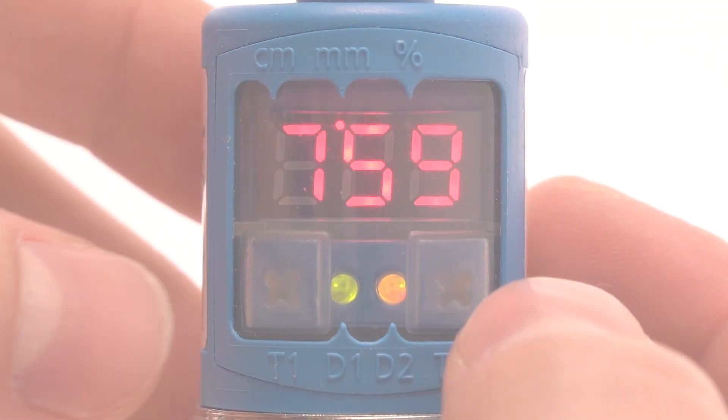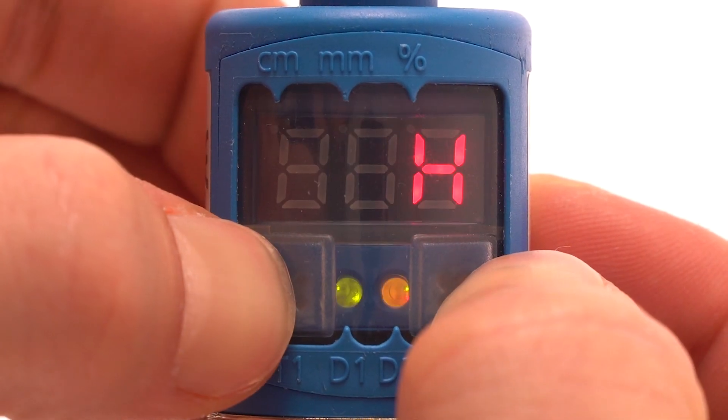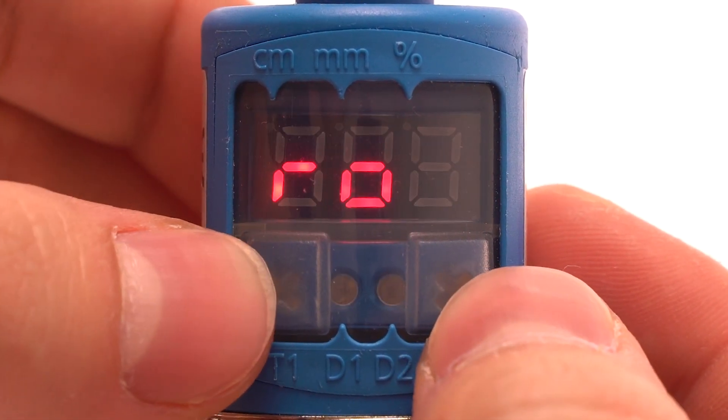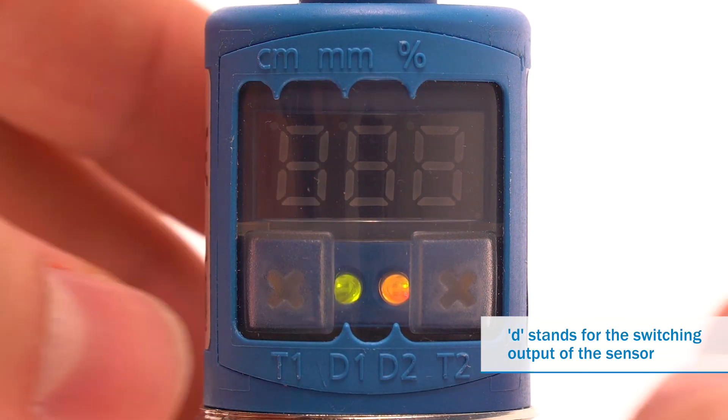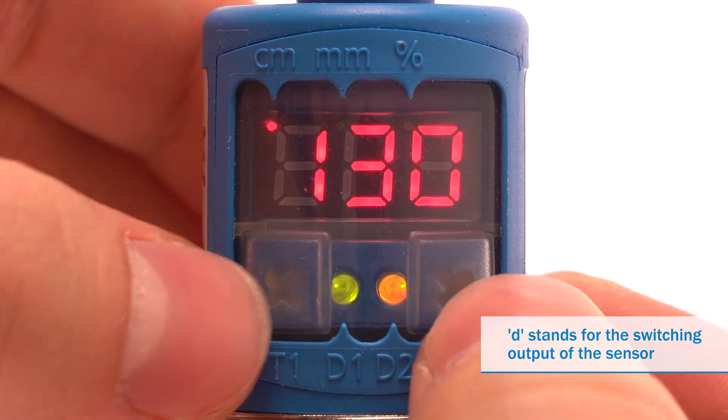Now keep T1 and T2 pressed down approximately 3 seconds until hello has been displayed. When D appears, simultaneously press T1 and T2.